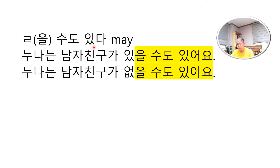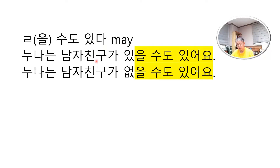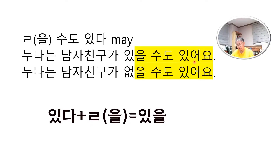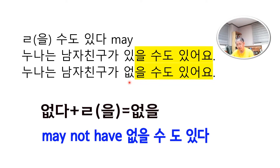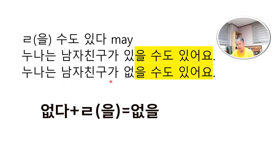을 수도 있다 — the most important word in this phrase is 도. When you add 도, 을 수도 있다 means 'may.' 누나는 남자친구가 있을 수도 있어요 — 누나는 남자친구가 있다 means 'my older sister has a boyfriend.' Combining 있다 with 을 수도 있다 gives 'she may have a boyfriend.' 누나는 남자친구가 없다 combined with 을 수도 있다 gives 없을 수도 있어요 — 'my older sister may not have a boyfriend.'